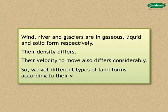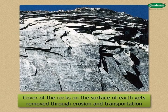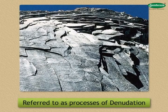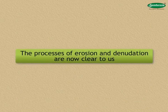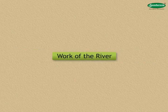The cover of the rocks on the surface of the earth keeps on getting removed through erosion and transportation. These processes together are referred to as the processes of denudation. So the processes of erosion and denudation are now clear to us.